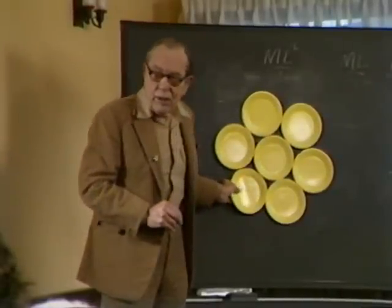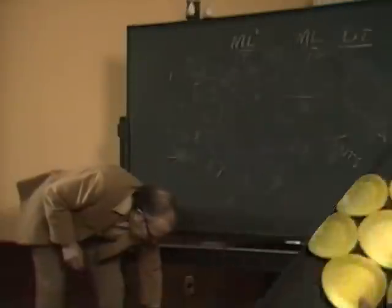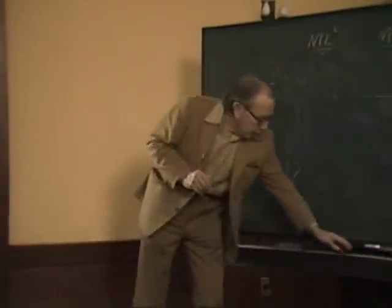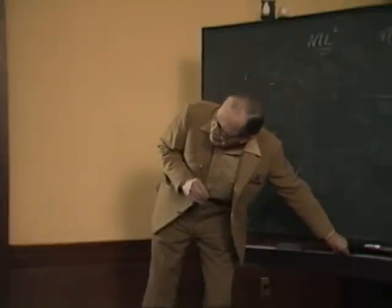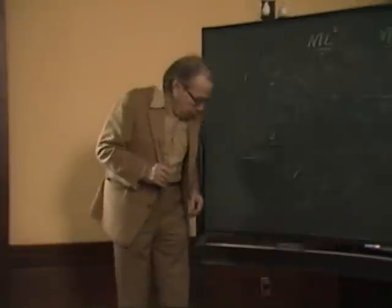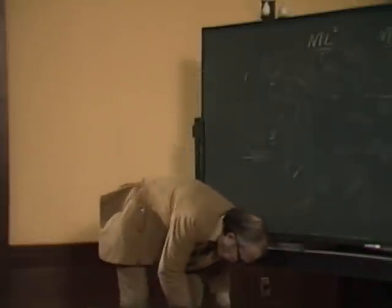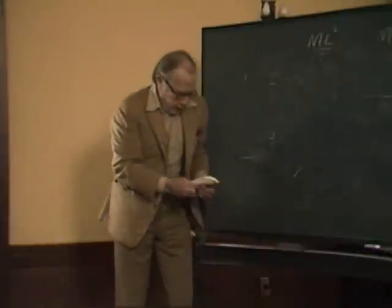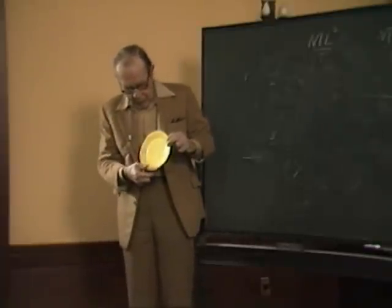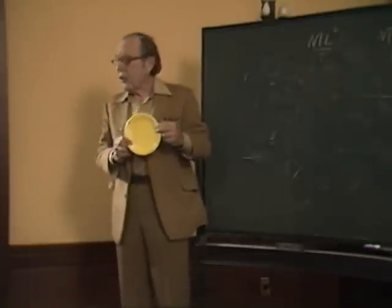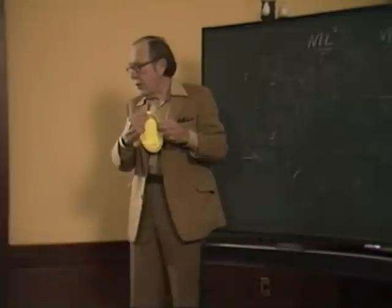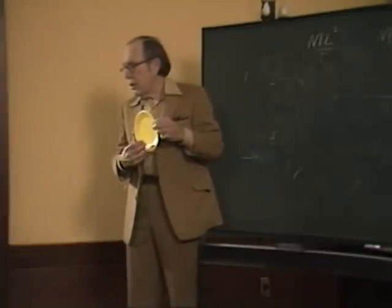I might as well mention the other thing that I forgot to say this morning — this I just thought of last night, so I like it because I haven't had a chance to get bored with it. The formula for the torus — get rid of this plastic — it involves the formula for the circle, which involves two pi: that's the ratio of the circumference to the radius.